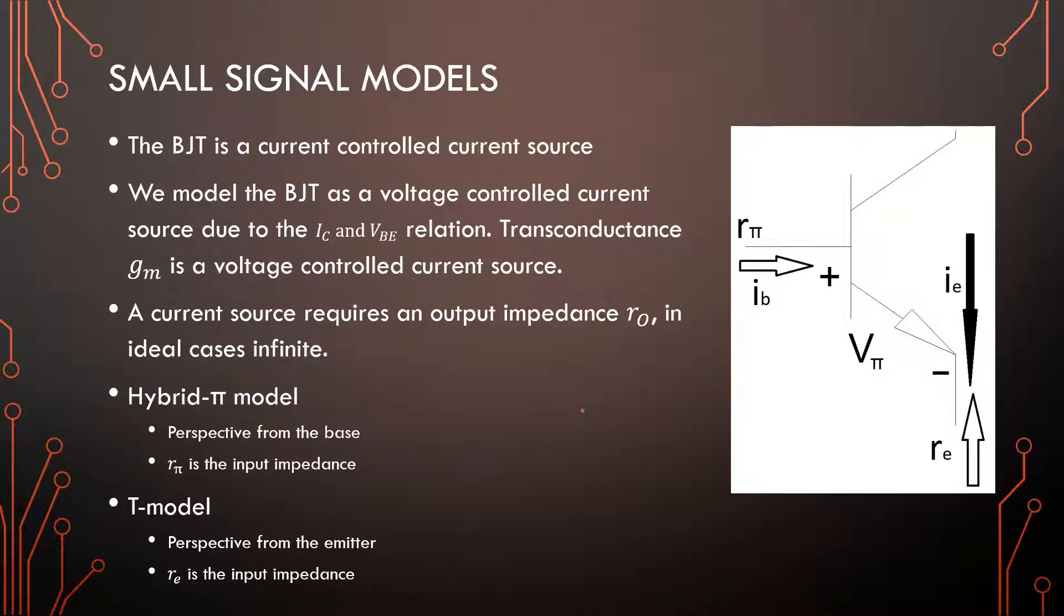So, the small signal model. We know that the BJT is a current controlled current source, but we have a relation between the collector current and the VBE voltage, the base voltage. And that means we have a transconductance. A transconductance is a voltage controlled current source. So, we can model our transistor as a voltage controlled current source with a change in V_pi. So this is without the DC, we can have a change in the collector current. So that means we have a current source, and a current source usually has, in parallel with it, according to Norton, an infinite impedance or a very large impedance. So, the transistor has an output impedance.